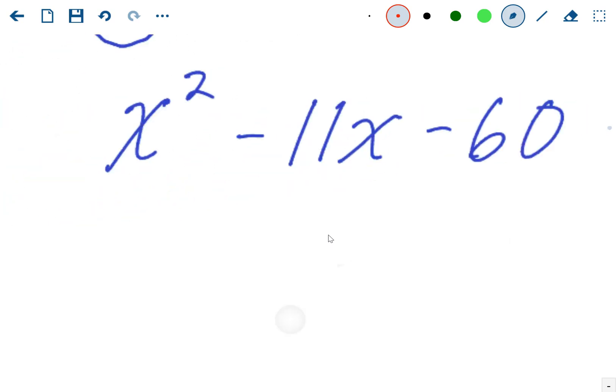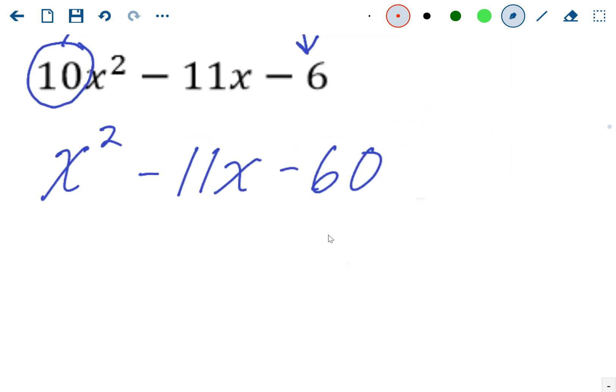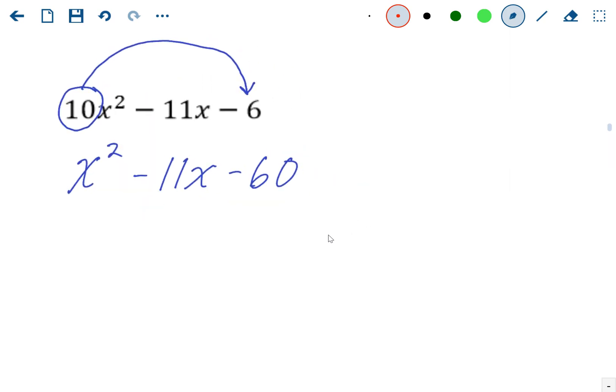Multiply to negative 60, and add to negative 11. Now if you can think of those numbers right away, that's great. I'll make a table, I'll list out all the factors of negative 60.